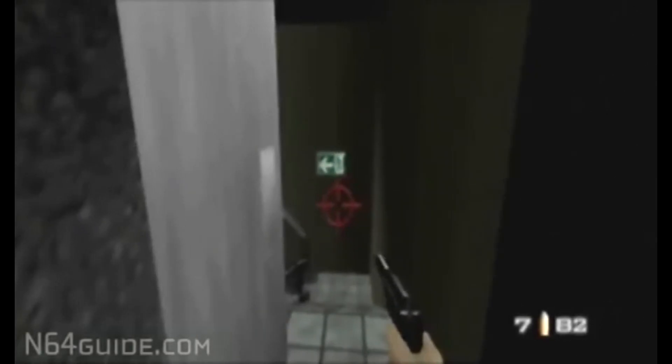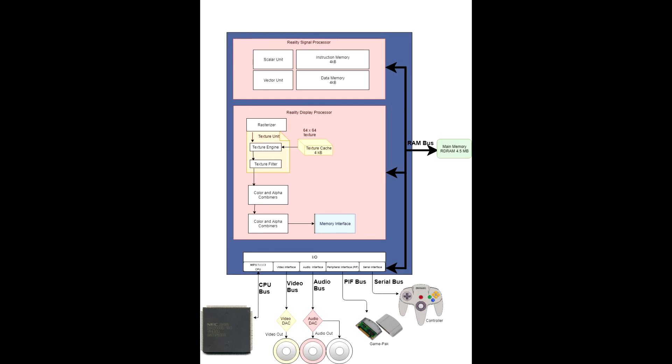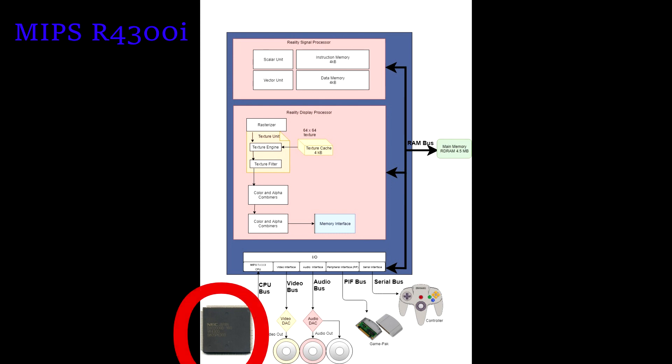N64 programmers worked their butts off to get products out the door in 6 to 12 months. This will be a basic overview of the architecture of the N64 and why it was so difficult to develop on — not going into massive detail, just an overview. I'm going to try and explain in embedded terms why the Nintendo 64 was particularly hard to develop on. The Nintendo 64 CPU was a special variant of the MIPS R4300, known as the 4300i. It was a little more beefed up — it had a 24 kilobyte L1 cache and was clocked around 94 megahertz.